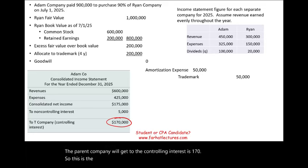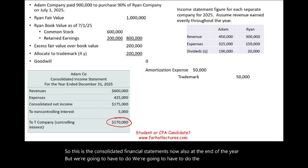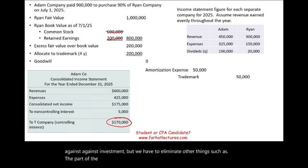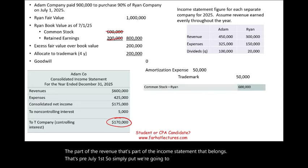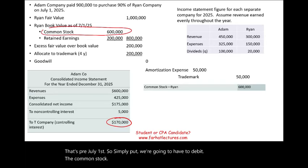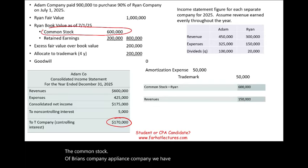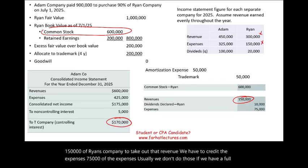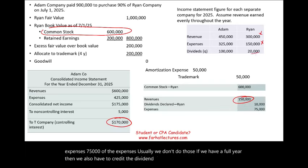Now we need to prepare the elimination entries at the end of the year. We have to eliminate Ryan's book value — common stock and retained earnings — against investment. We also need to eliminate the portion of revenue that is pre-July 1st: debit Ryan's revenues $150,000 to remove that pre-acquisition revenue, credit Ryan's expenses $75,000. These eliminations are not done in a full-year acquisition. We also have to credit dividends declared for the half year, which is $10,000.